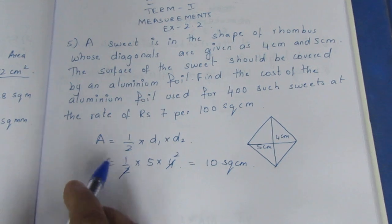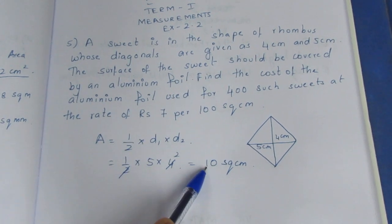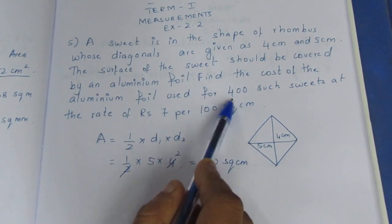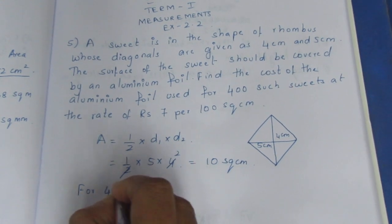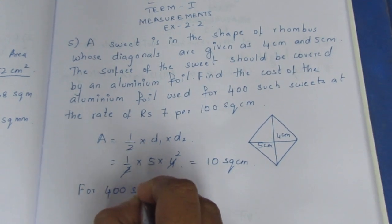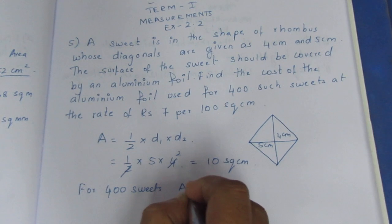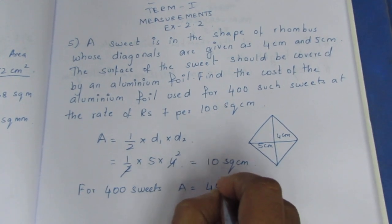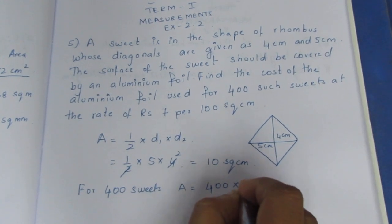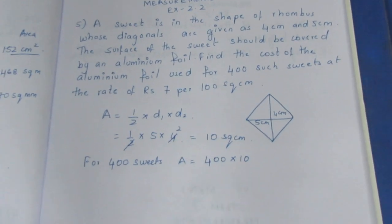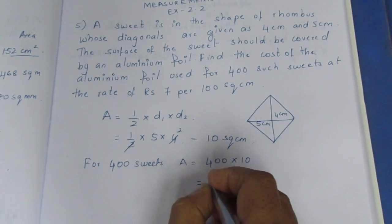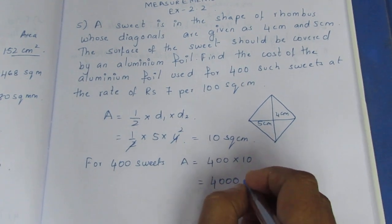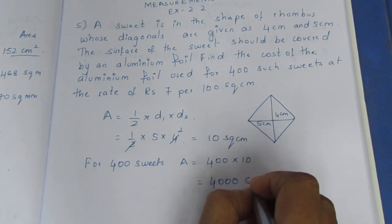So, the area of one sweet is 10 cm². For 400 suites, the total area is equal to 400 into 10, which equals 4,000 square centimeters.